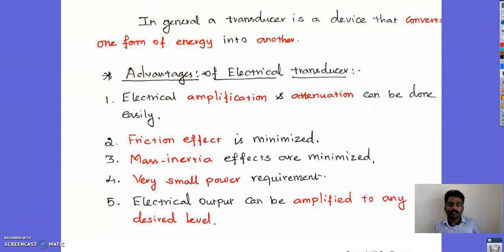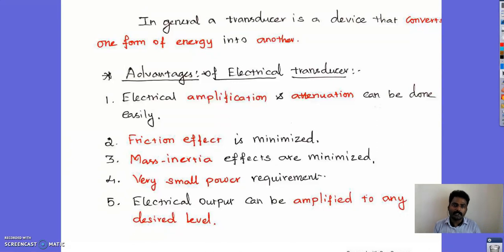Here the device converts a physical quantity into an electrical quantity. We call those transducers as electrical transducers — a transducer which converts a physical quantity into an electrical quantity is termed as electrical transducer, because the output is electrical energy. Some of the advantages of electrical transducers are listed here.